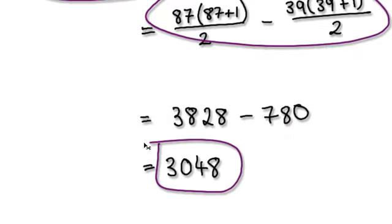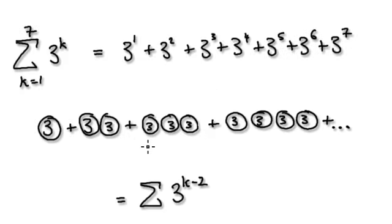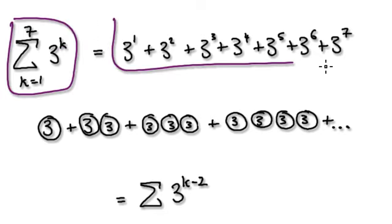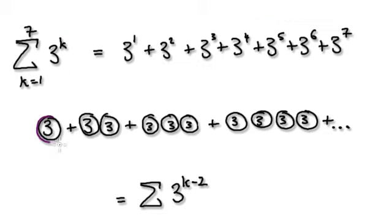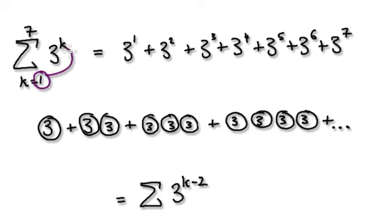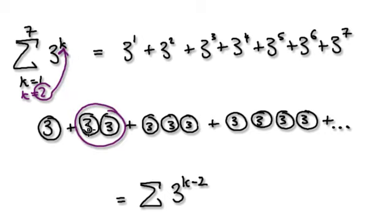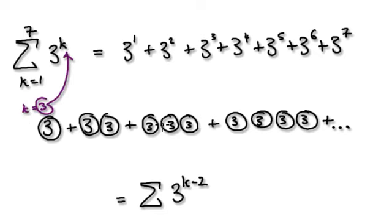The next random example — suppose you're given something like this: you've got 3 to the power of k. What this means is: 3, plus 3 times 3, plus 3 times 3 times 3, and so on. When k equals 1 you get 3, when k equals 2 you get 3 times 3, when k equals 3 you get 3 times 3 times 3, and so on.